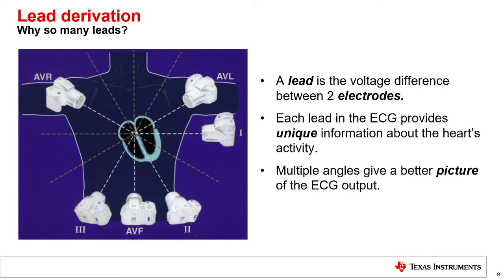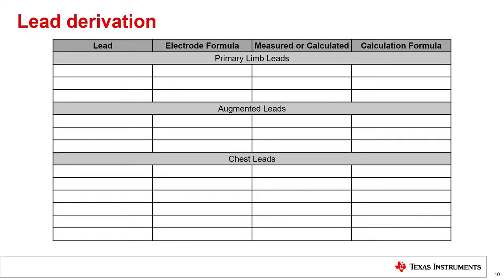A lead in ECG is the voltage difference between two points on the body. For most leads, each point is measured by an independent electrode, though some use a calculated average as the second point. You can think of different leads as different viewing angles of information about the heart's electrical activity. The number of leads in an ECG system can vary widely. Simpler ECG systems generally use no more than the first two or three primary leads, typical in consumer applications and small, portable ECG equipment meant for basic diagnostic purposes. On the other hand, high-quality diagnostic systems are more complex and may use up to 15 different leads. The more viewing angles included in the ECG, the more diagnostic information the physician can gather about the patient's heart health.